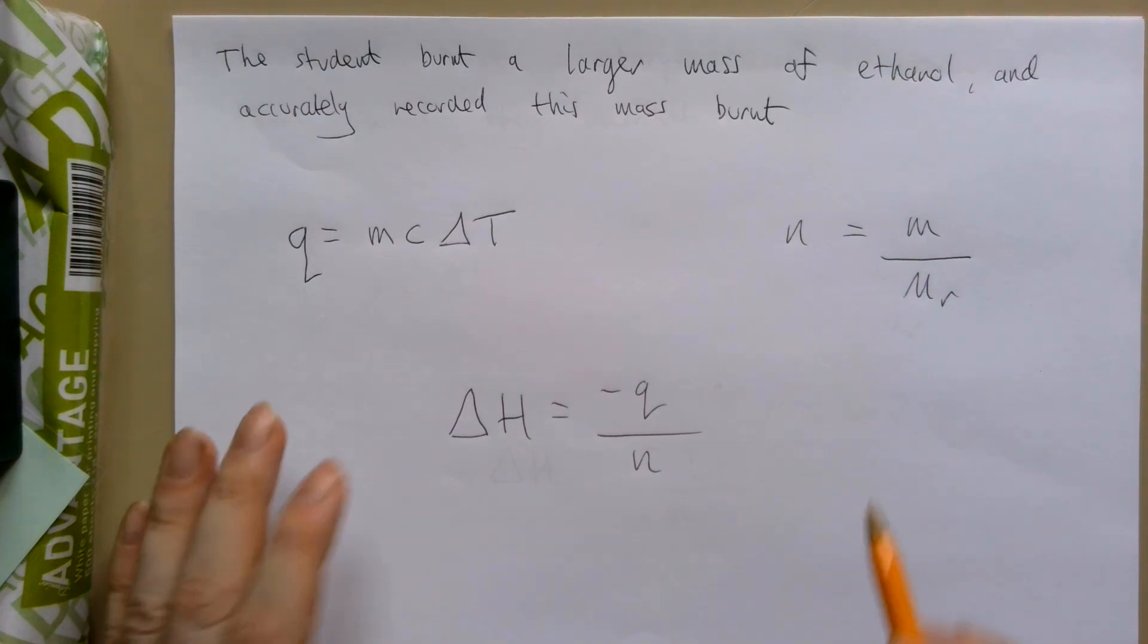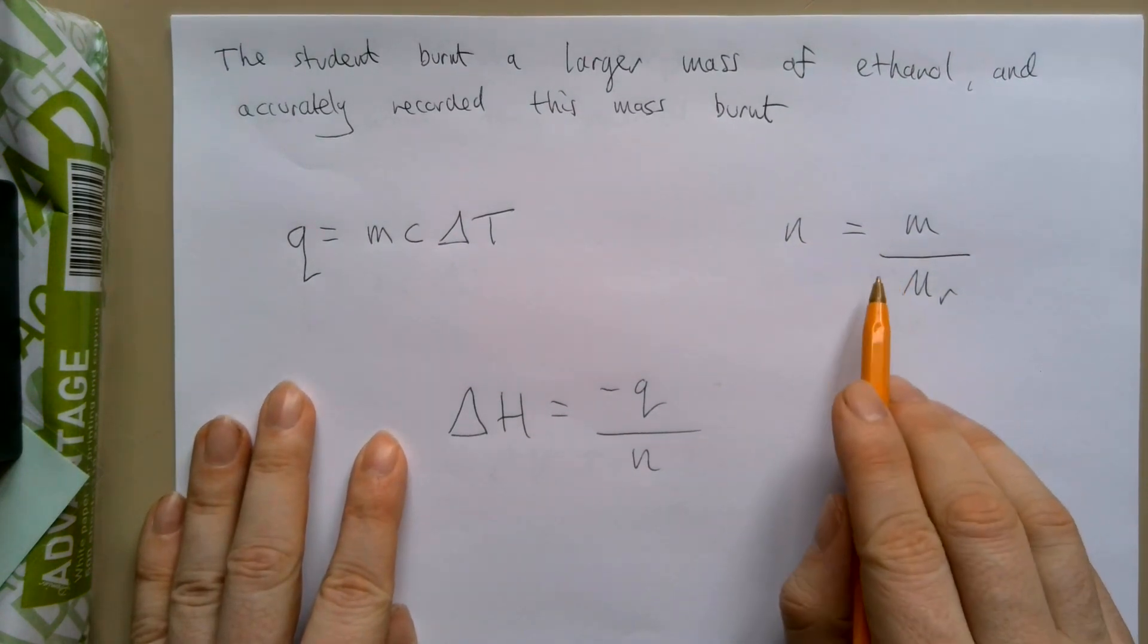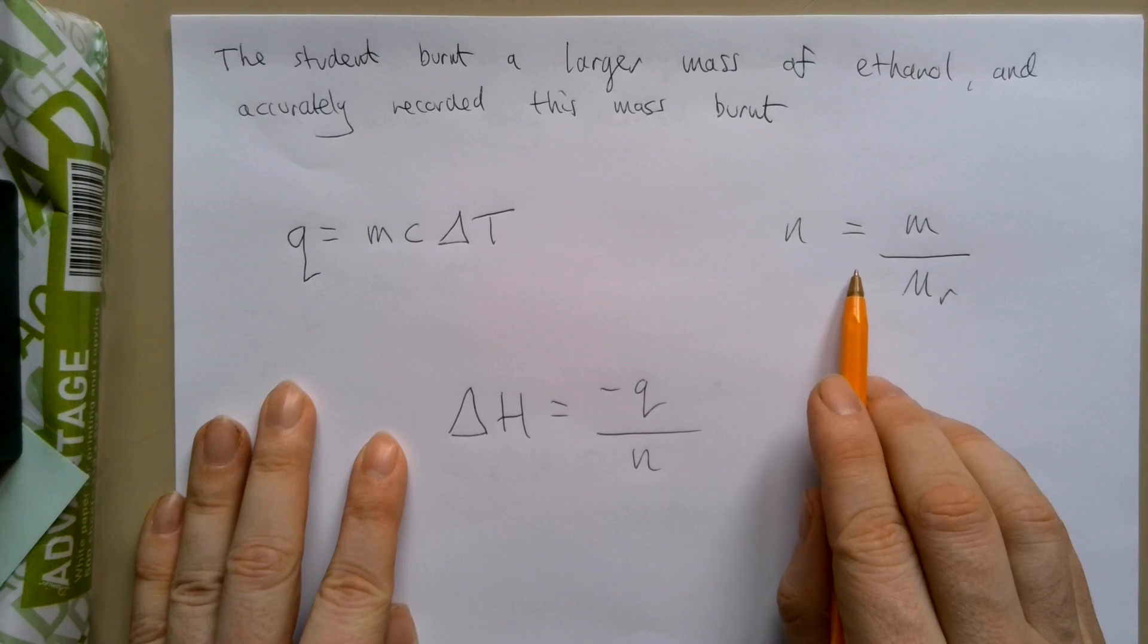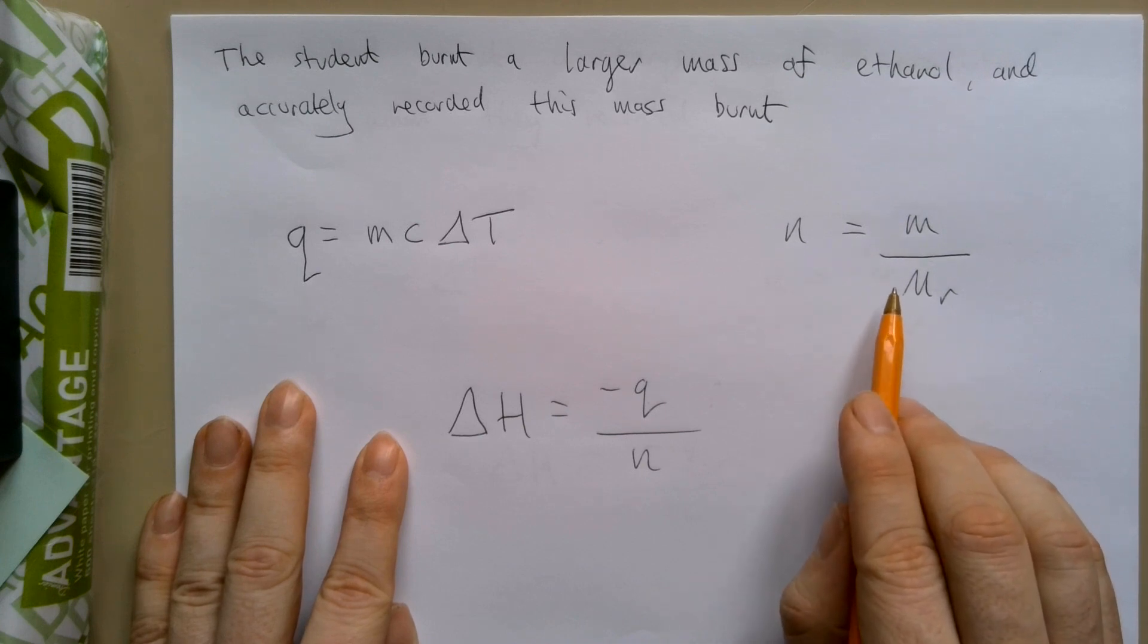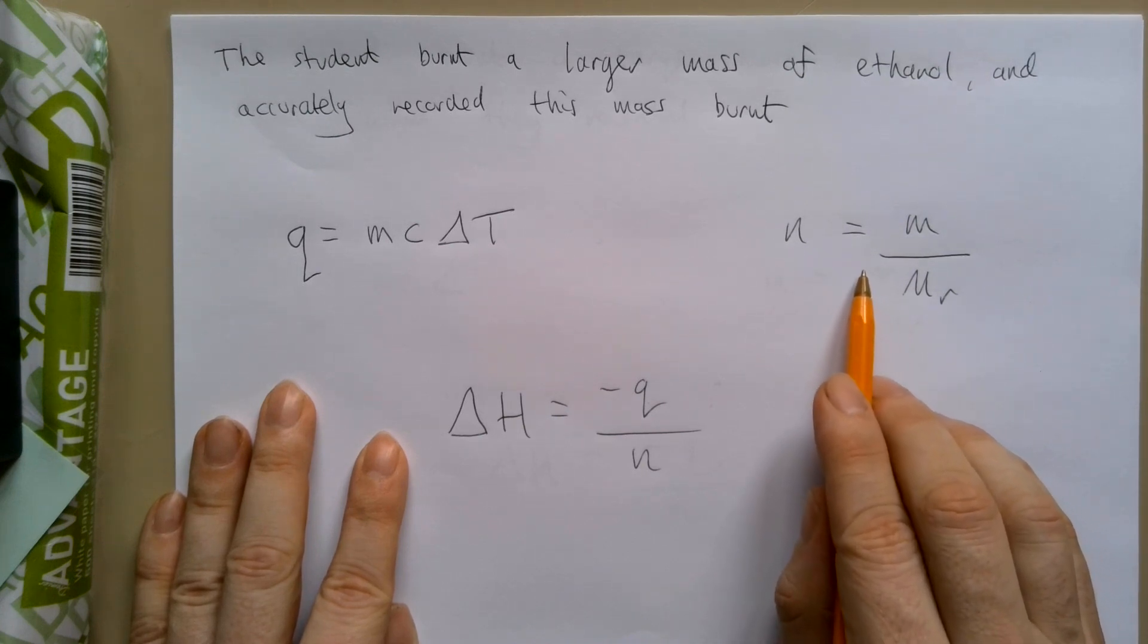First of all, let's look at our moles equals mass over Mr equation. Remember this equation is all about the chemical, so it's the mass of the chemical, the Mr of the chemical. So in our case, ethanol.